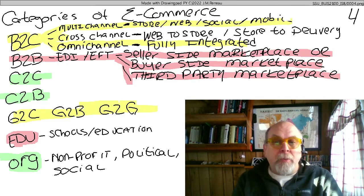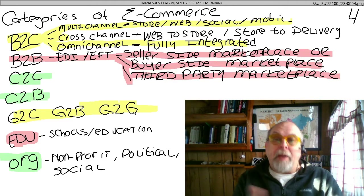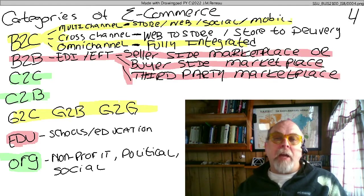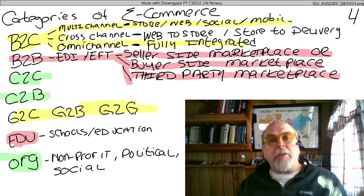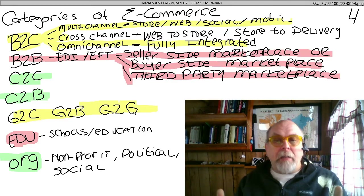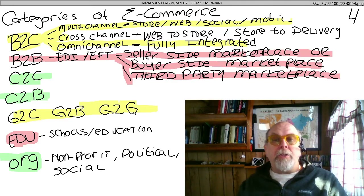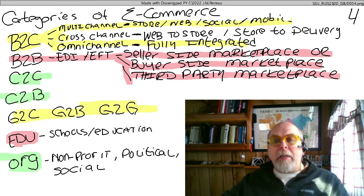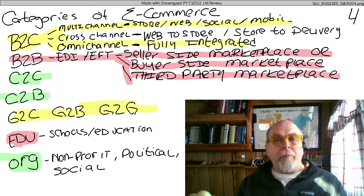A cross-channel business-to-customer model involves things like web-to-store or store-to-delivery. Many retailers and e-commerce sites are embracing this: you can go online, order a product, and have it shipped to a store. What they're hoping is that when you go to pick it up, you'll grab some other things — that's cross-channel thinking. The omni-channel is where the entire organization and the entire business-to-customer relationship is fully integrated — social, mobile, web, and store — giving the customer a seamless experience across all of them.